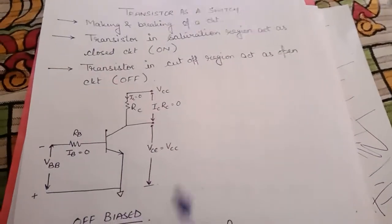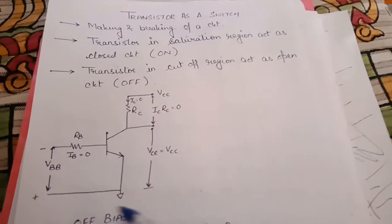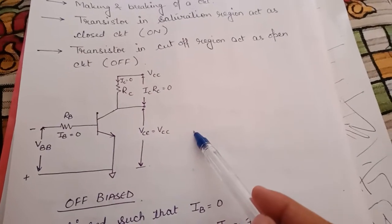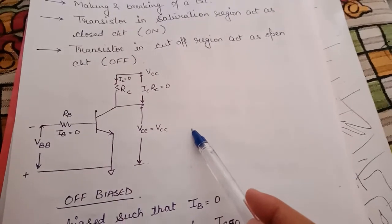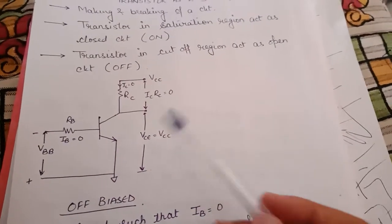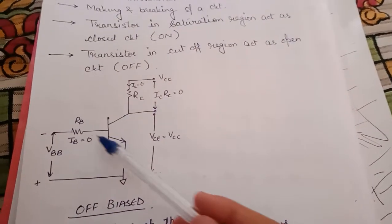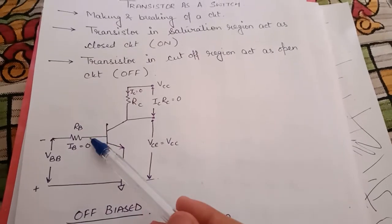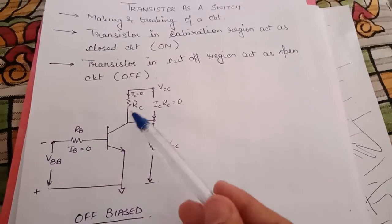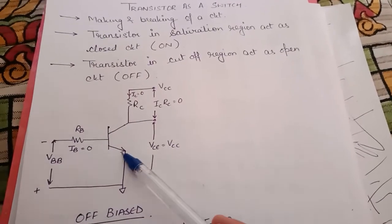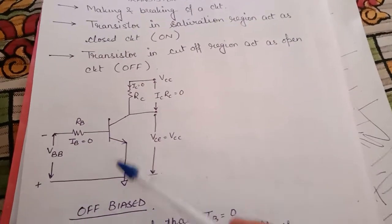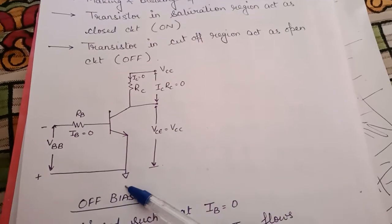Now this is the circuit diagram of a simple common emitter transistor. Here we have the emitter, base, and collector. This is a common emitter configuration.